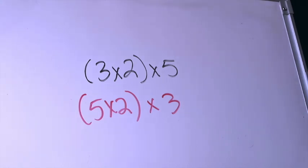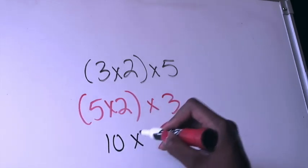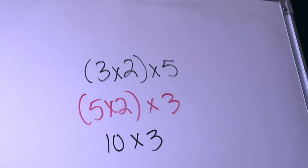My factors are the same. The grouping has just changed. Following the rules, I'm going to now solve what's in the parentheses first and that's easy. I know that 5×2 is 10 and then I'm going to multiply that product by the remaining factor which is 3 and that is super easy.